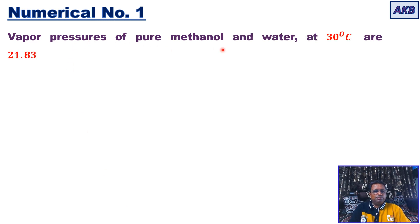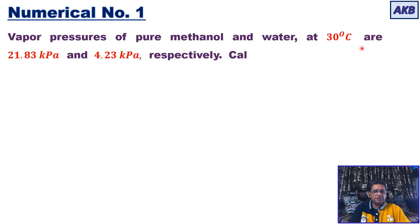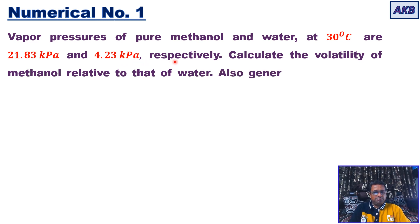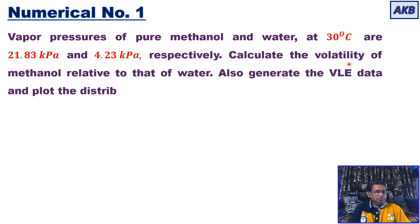The numerical statement: vapor pressures of pure methanol and water at 30 degrees Celsius are 21.83 kilopascal and 4.3 kilopascal respectively. We need to calculate the volatility of methanol relative to that of water, generate the VLE data, and plot the distribution diagram.